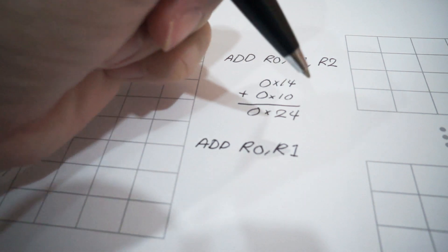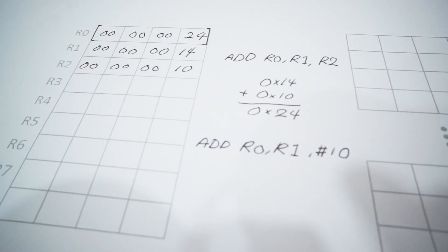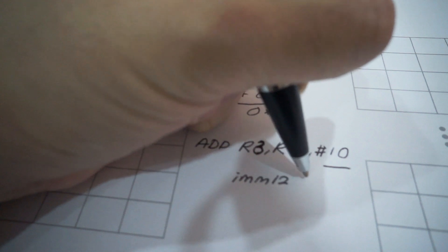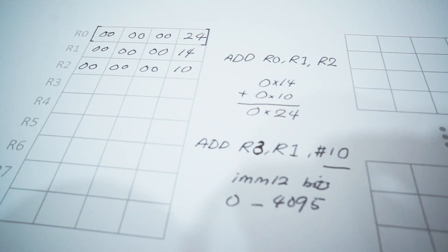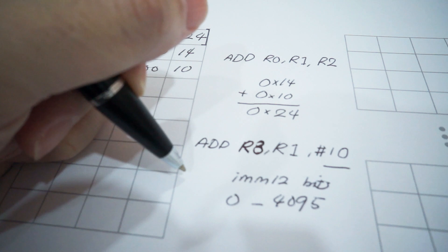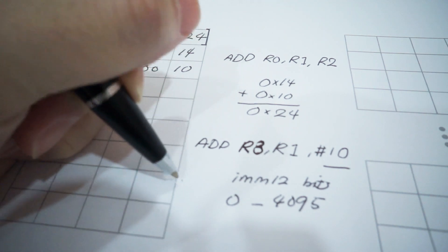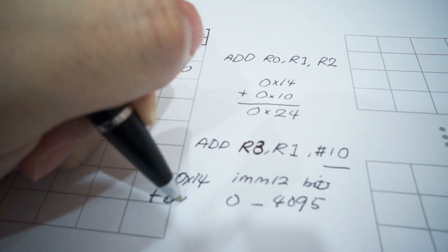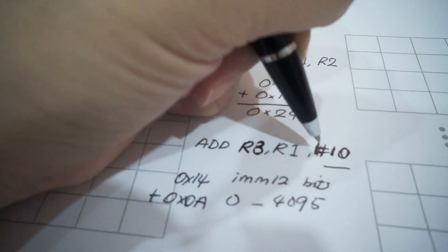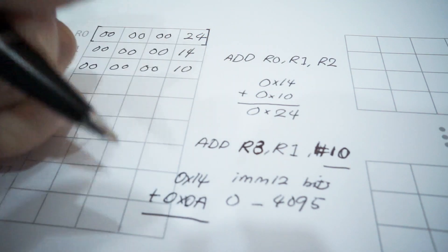In addition, we could also use an immediate value for the third operand. However, please take note that the immediate value for addition is only 12 bits in length, which ranges from 0 up to 4095. For example, ADD R3, R1, with immediate value 10 — since the immediate value doesn't come with a prefix 0x, this means it is a decimal number, or 0xA in hexadecimal.